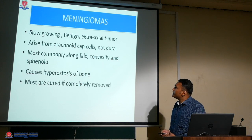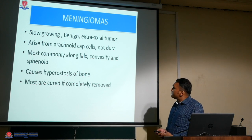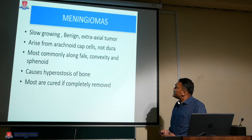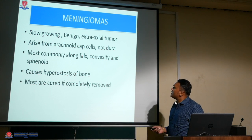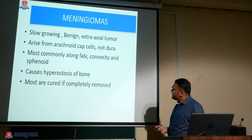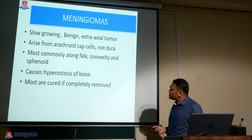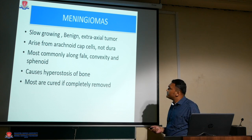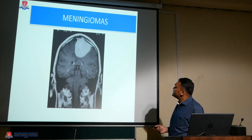Meningiomas are slow-growing, benign, extra-axial tumors arising from the arachnoid cap cells — not from the dura — and most commonly along the falx, convexity, and sphenoid. They cause hyperostosis of the bone. Most are cured if completely removed. This is an example of a meningioma — broad-based, arising from the parasagittal region, with a broad base towards the dura.